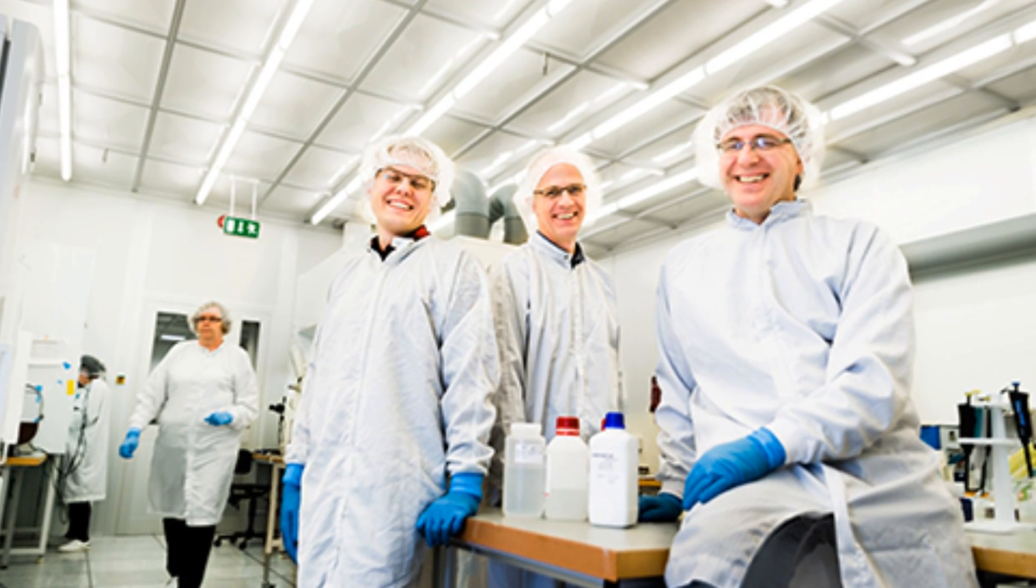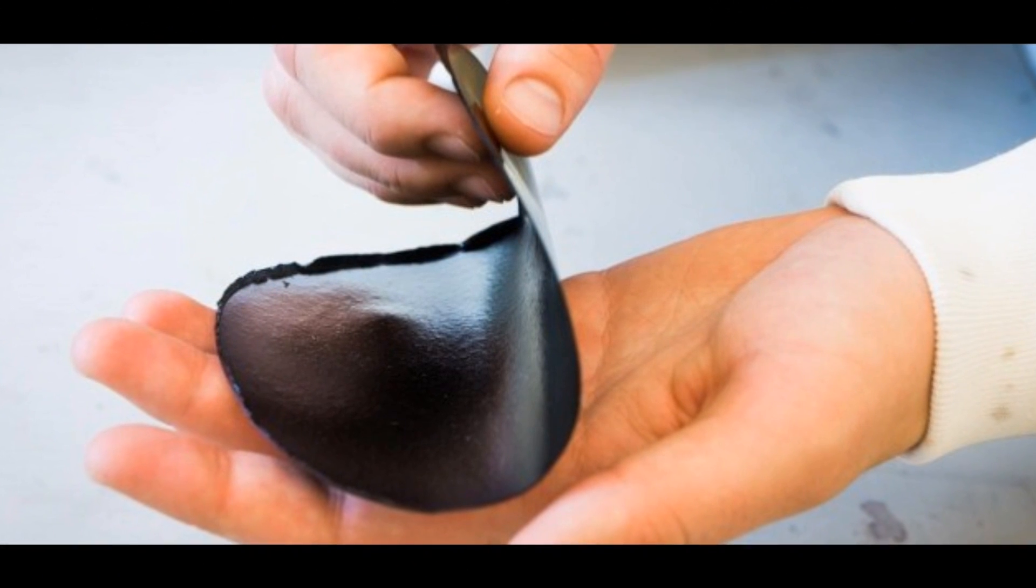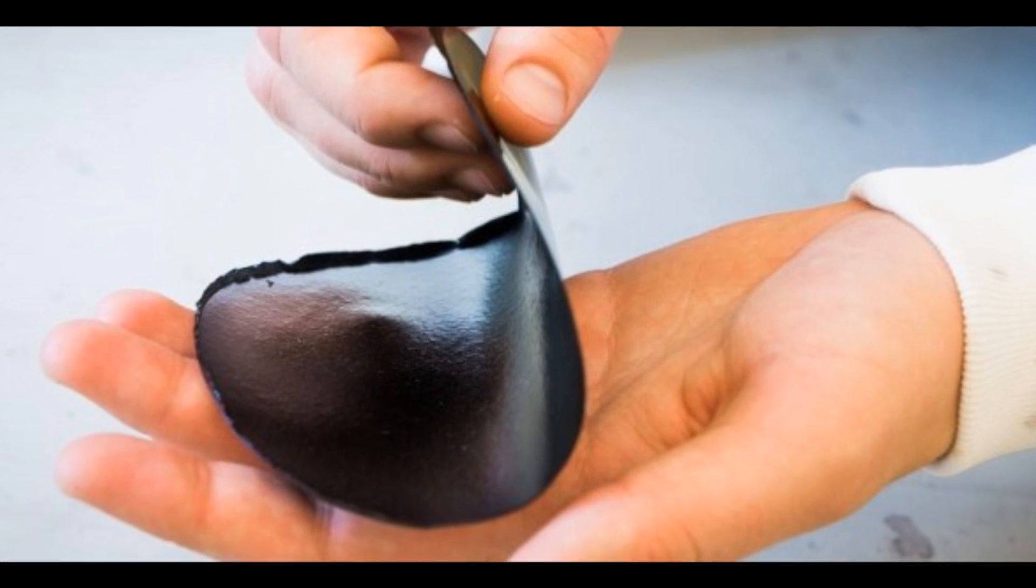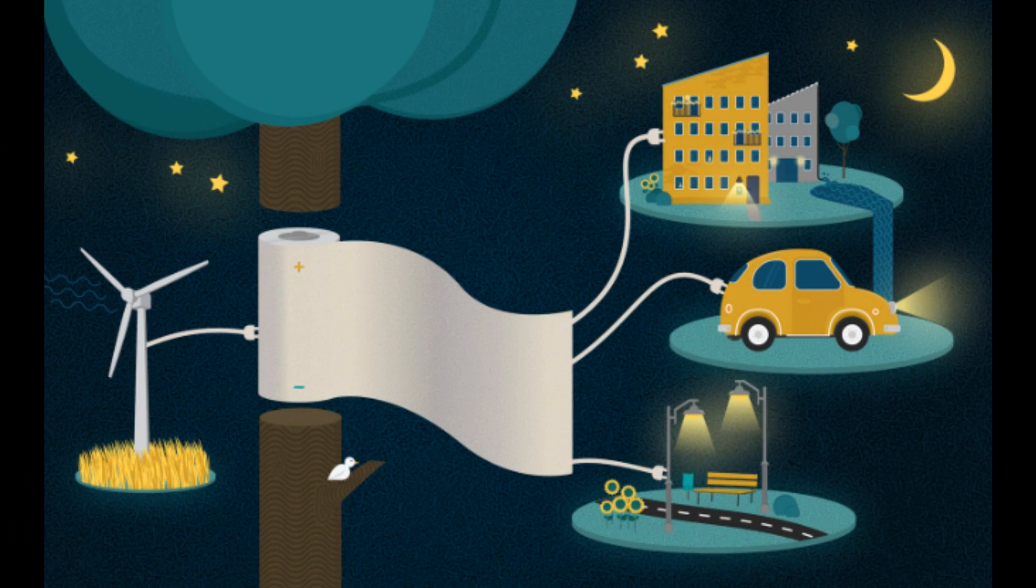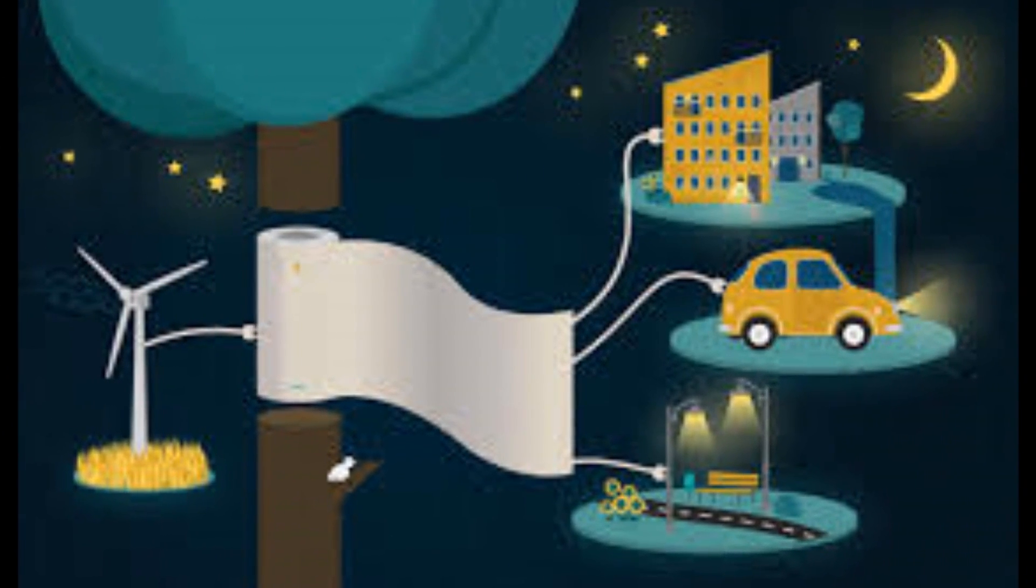The material can be recharged hundreds of times and each charge only takes a few seconds. Light-emitting power paper is cheap and eco-friendly. The paper is waterproof and was created with no dangerous chemicals or materials.